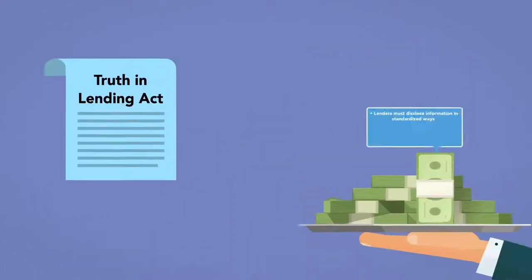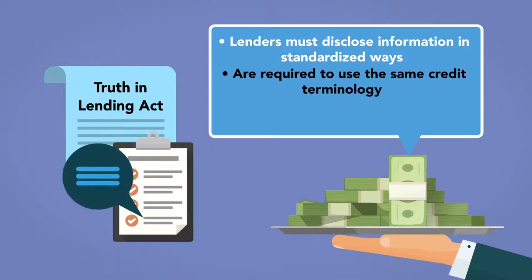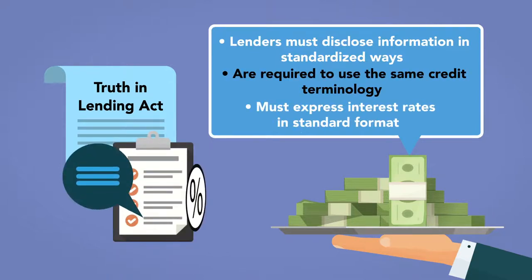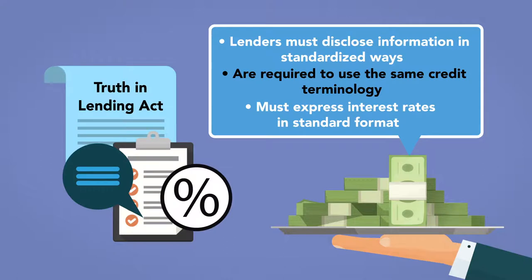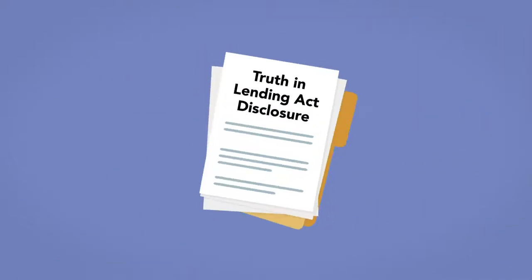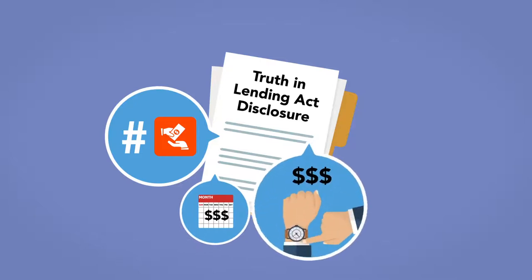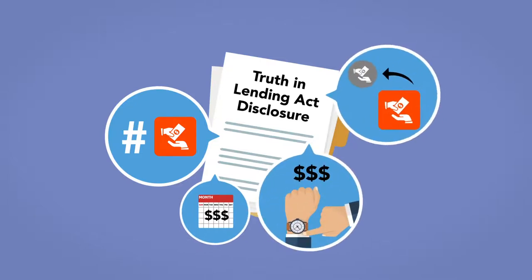Under the Act, lenders must disclose information in standardized ways, are required to use the same credit terminology, and must express interest rates in standard format so that consumers have the best chance to understand all the terms to which they are agreeing. Truth in Lending Act disclosures include terms such as the number of payments, the monthly payments, late fees, and whether a loan can be prepaid without a penalty.